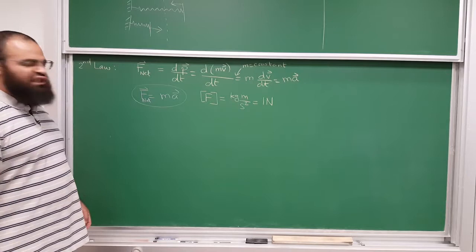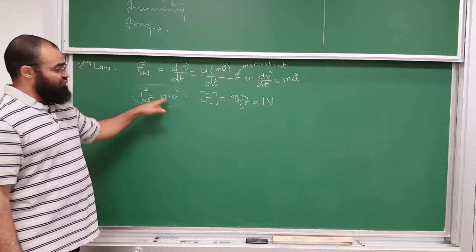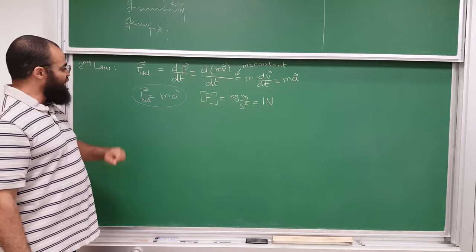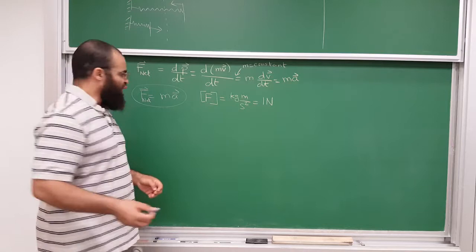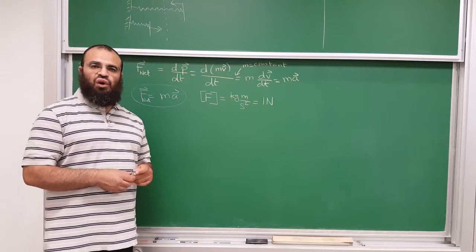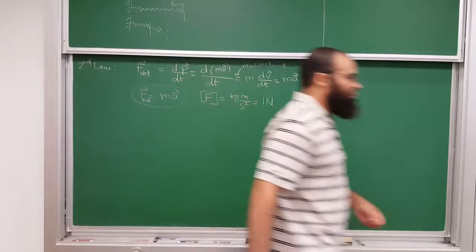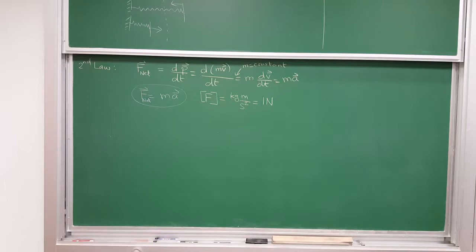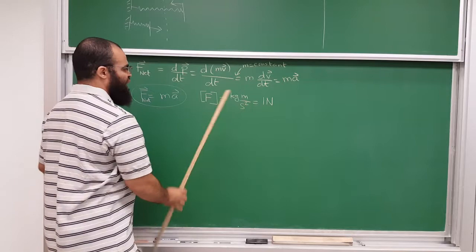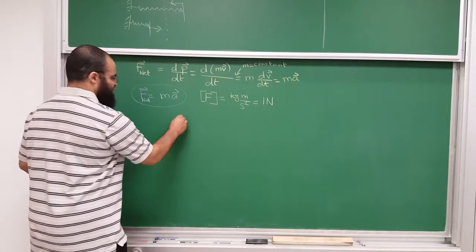Physics is an experimental science. You write an equation, you better be able to design an experiment where you can measure the acceleration, measure the mass, and measure the force. How would you measure the acceleration of an object? What equipment do you need? Acceleration is in meters per second squared, so what you need is a way to measure position and a way to measure time.